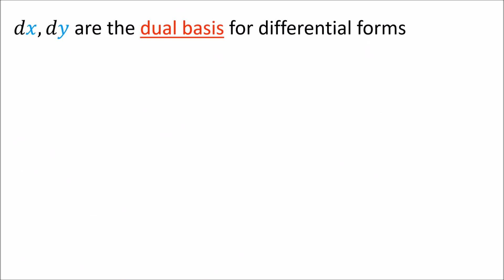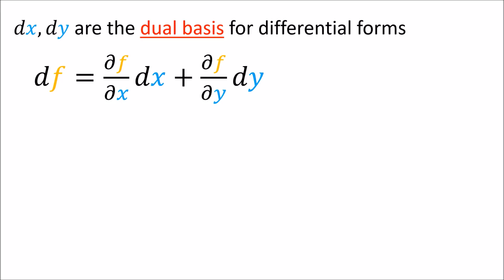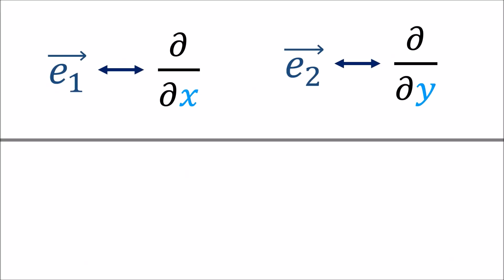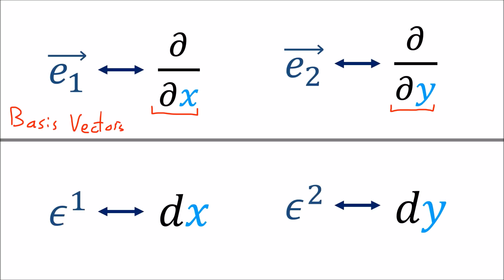Just as the x and y partial derivatives are the calculus versions of basis vectors, the differentials dx and dy — also called covector fields — are the calculus versions of basis covectors.